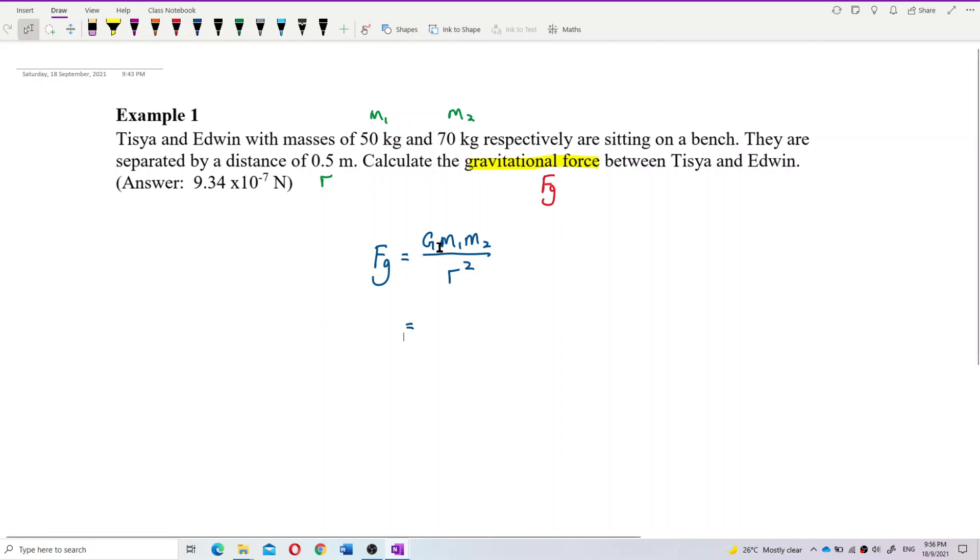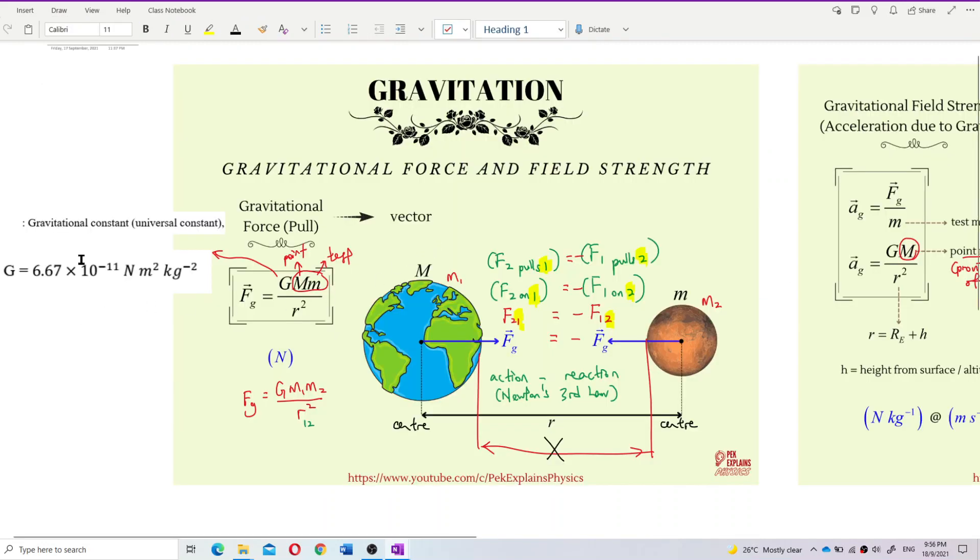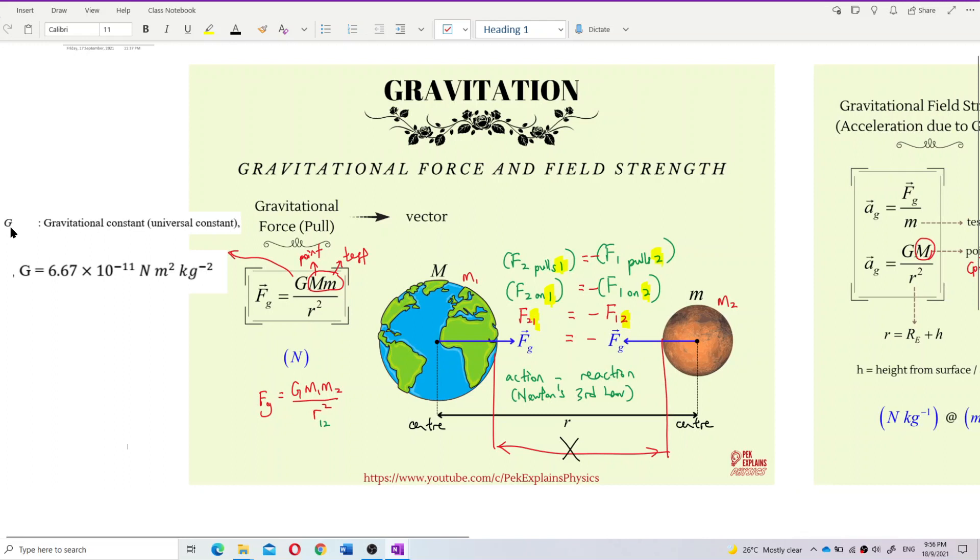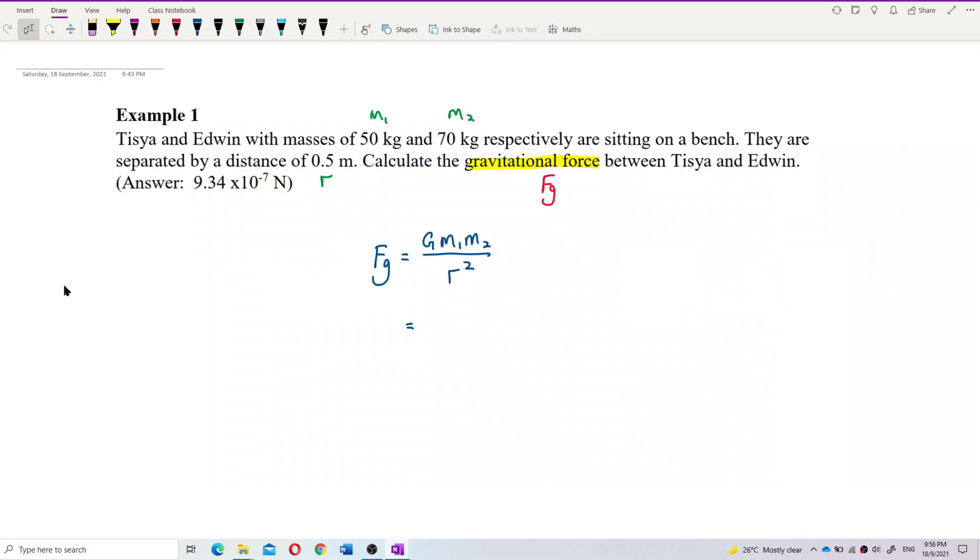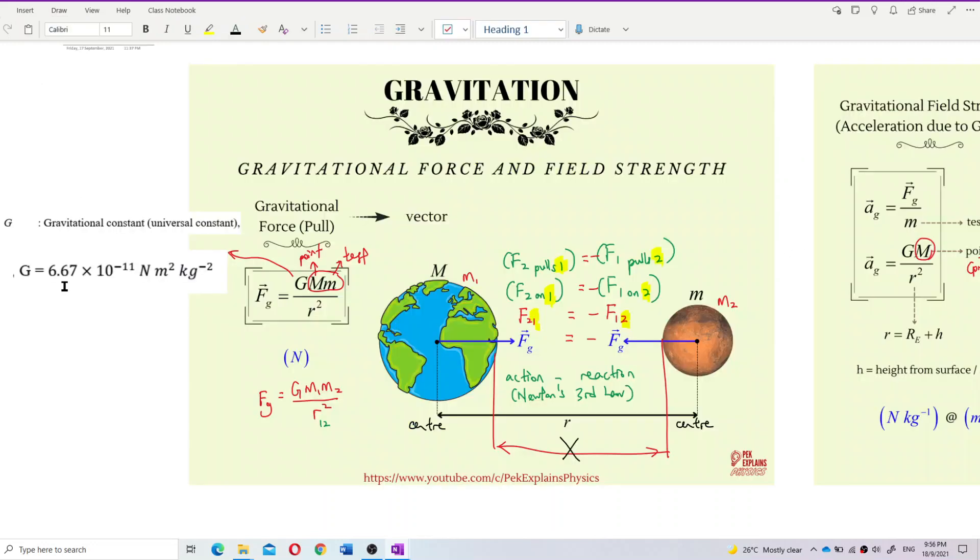The value of G is the gravitational constant, or universal constant. It has the value of 6.67 exponent negative 11. So 6.67 exponent negative 11. Am I correct? Yeah, I'm correct.